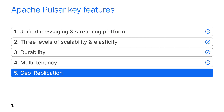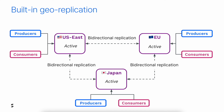Now I'd like to talk about geo-replication, which is also an amazing Pulsar feature. Geo-replication provides disaster recovery. You have several clusters deployed in different regions or different data centers. If you lose a region, you can recover from it. Pulsar can replicate the data to different regions automatically in a bi-directional way, and this is a built-in feature.